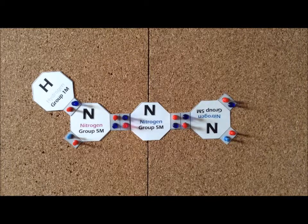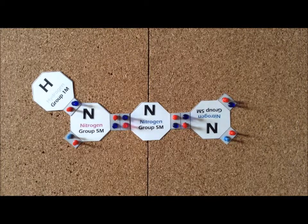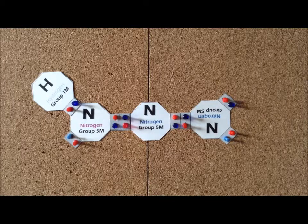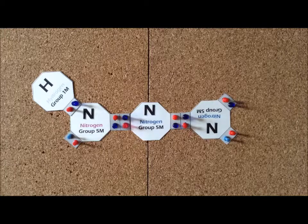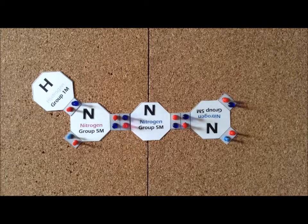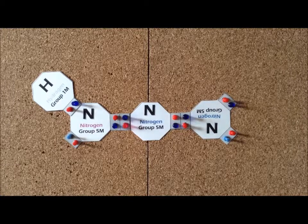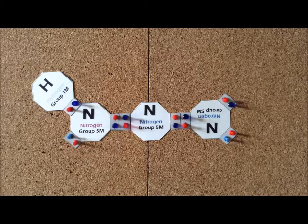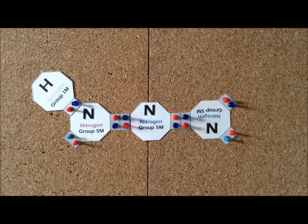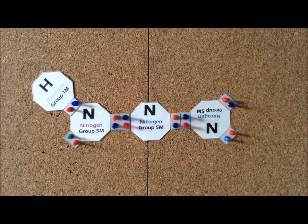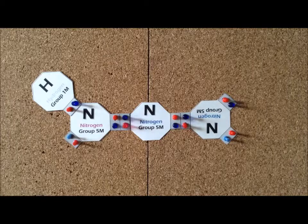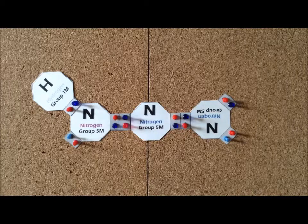Hydrozoic acid has the chemical formula HN3. Each nitrogen contributes 5 valence electrons. Since there are 3 nitrogen atoms, that gives us a total of 15 electrons, plus the hydrogen atom contributes 1 electron. So we have a 16 electron system. In many ways we'll see that hydrozoic acid bears a strong resemblance to carbon dioxide.